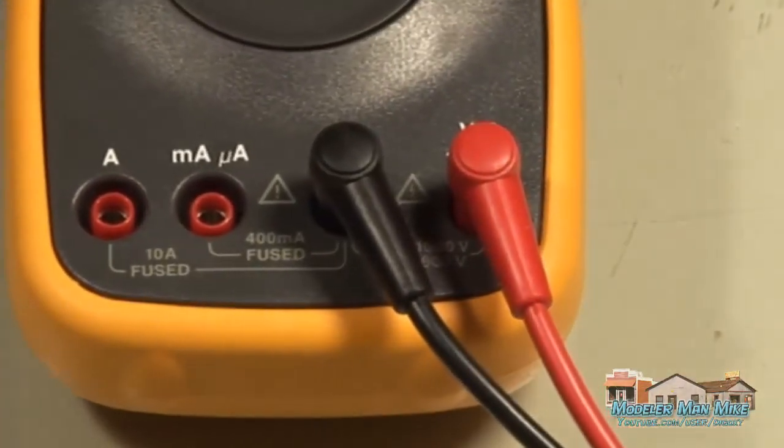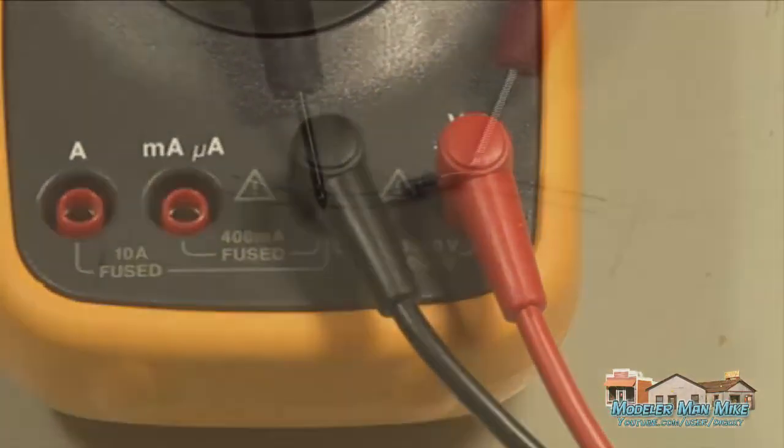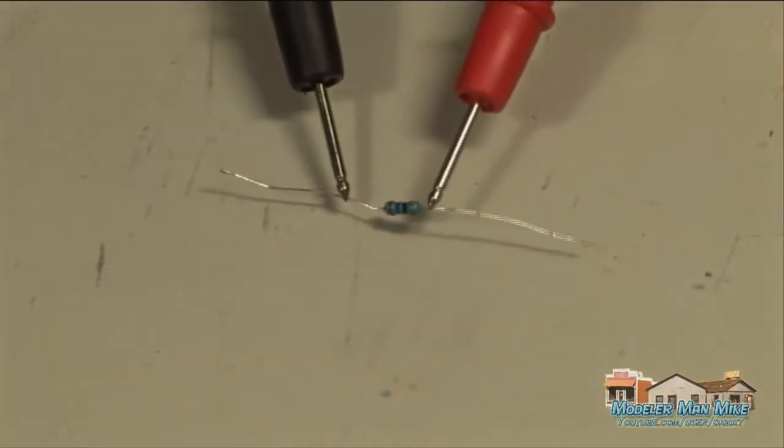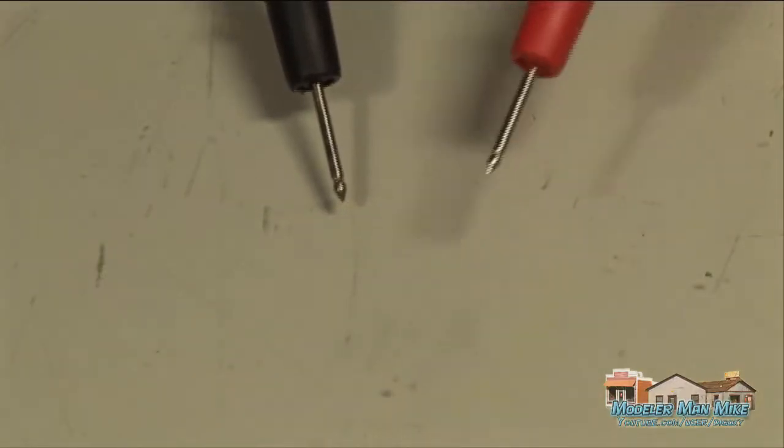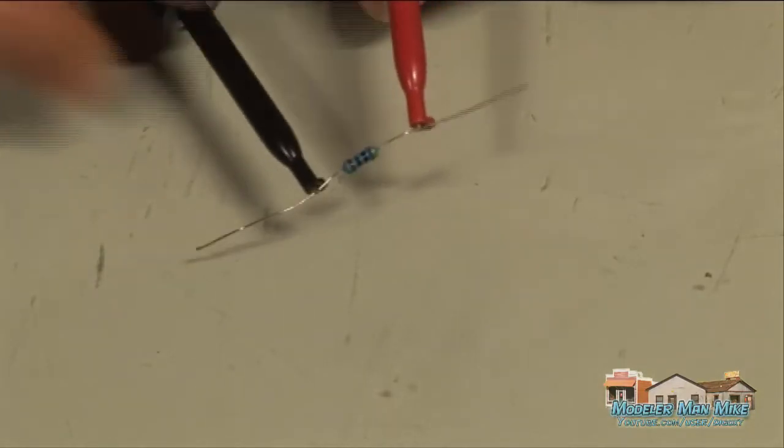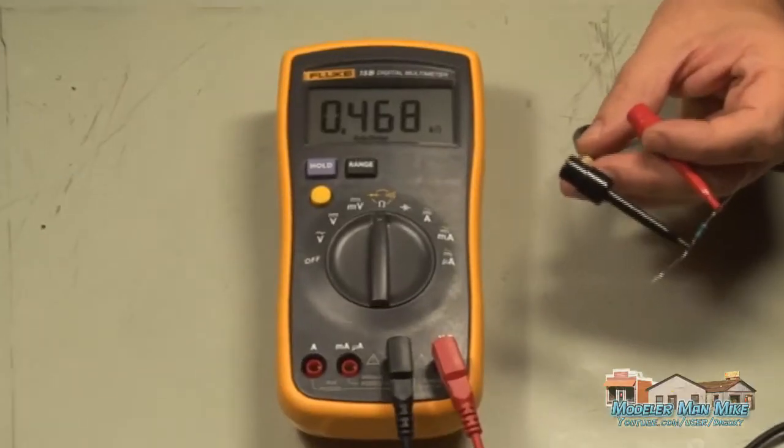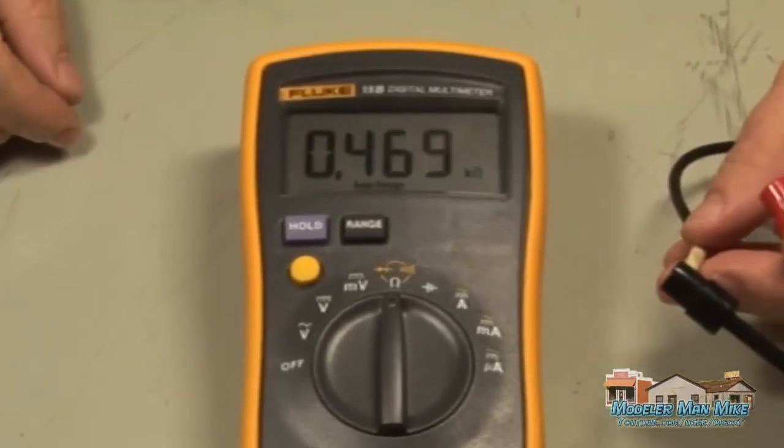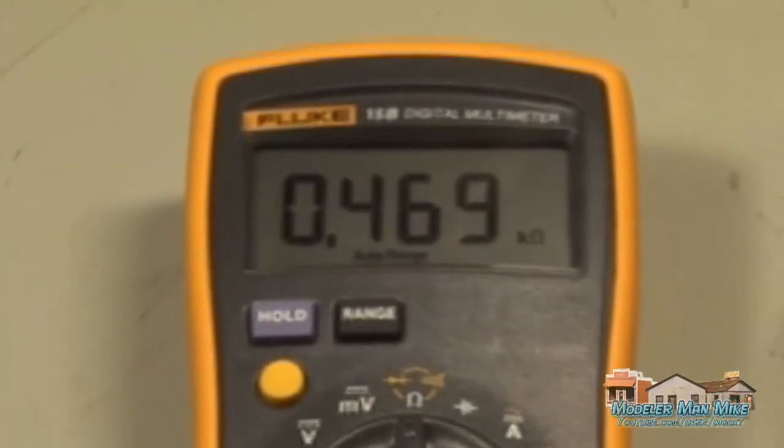Testing resistors is kind of cumbersome without the clippy things. You can do this fairly simple if you set it out on the bench. I use my clippies for this though. Just clip it on either side of the resistor and get a reading. This is a 470 ohm resistor.